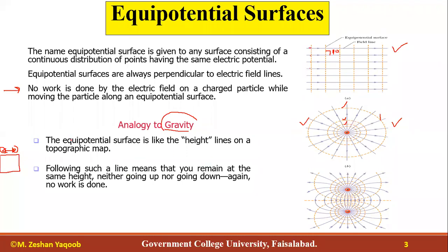An analogy to gravity: the equipotential surface is like the height contour lines on a topographic map. Following such a line means you remain at the same height — neither going up nor going down — so no work is done. Similarly, when a charged particle moves along an equipotential surface, the net work done by the electric field is zero.